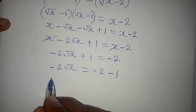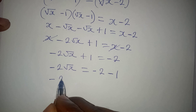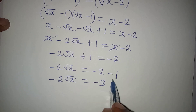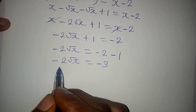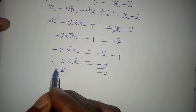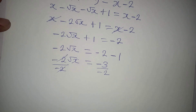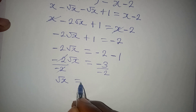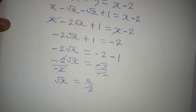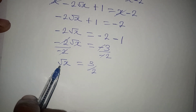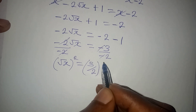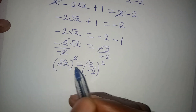So we have minus 2 root x equal to minus 3, since minus 2 minus 1 is minus 3. Now divide both sides by minus 2. The minus 2 cancels, and the negatives cancel, giving square root of x equal to 3 over 2. To remove the square root we square both sides.